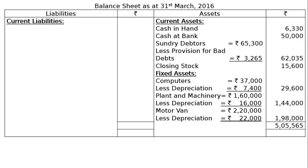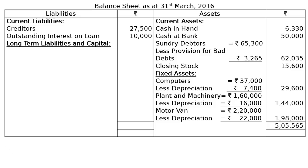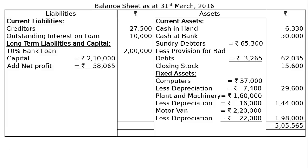On the liability side, current liabilities: creditors Rs. 27,500; outstanding interest on loan Rs. 10,000, because Rs. 10,000 was added as outstanding interest and is shown under current liabilities. Under long-term liabilities: 10% bank loan Rs. 2,00,000. Capital Rs. 2,10,000 plus net profit Rs. 58,065 — final column Rs. 2,68,065. The liability side totals Rs. 5,05,565.